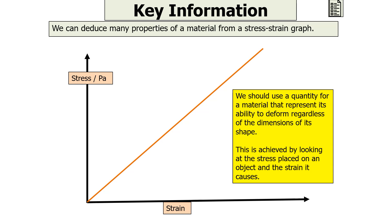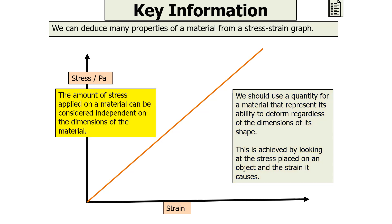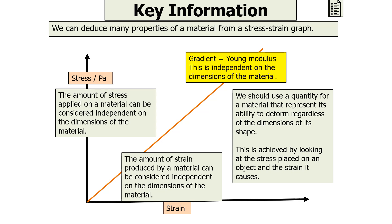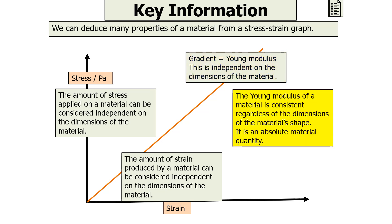When we consider a stress-strain graph, the stress placed on a material is considered independent of the material's dimensions, whilst the strain produced can also be considered independent of those dimensions. For a stress-strain graph, the gradient of the line is not the stiffness but rather the Young Modulus. This tells us that the Young Modulus is independent of the dimensions of the material — it is consistent regardless of its dimensions, making it an absolute material quantity.